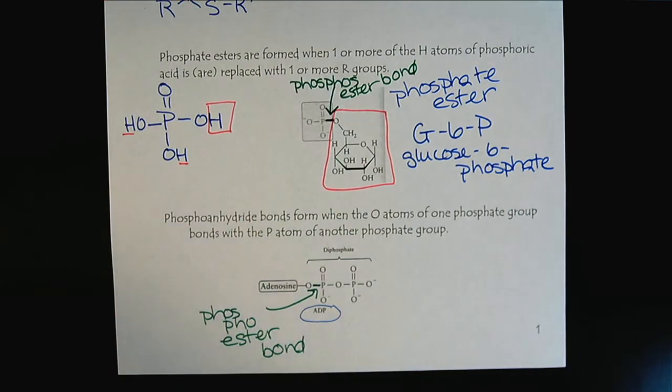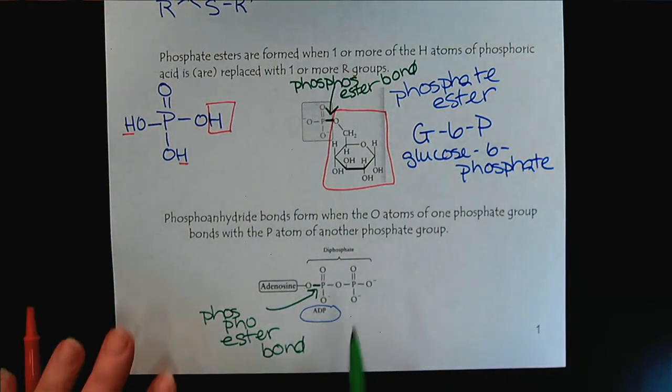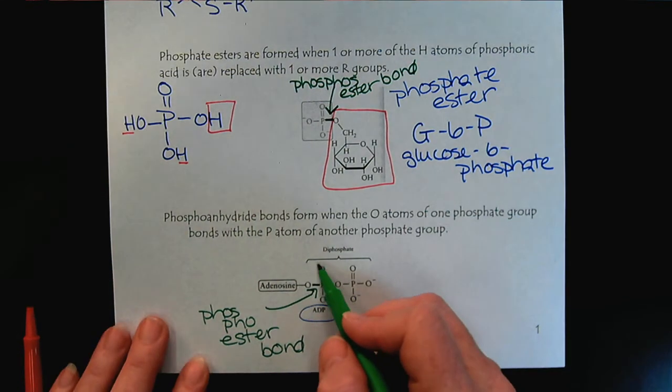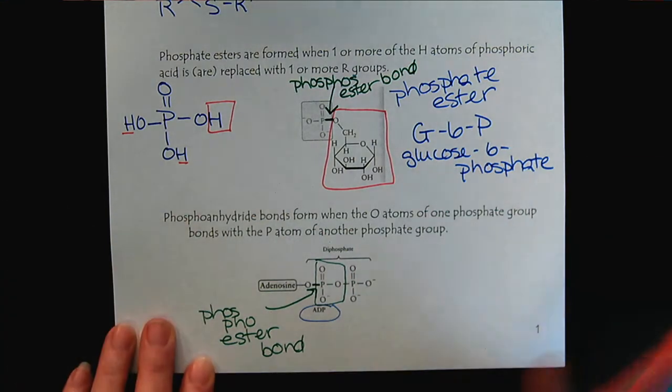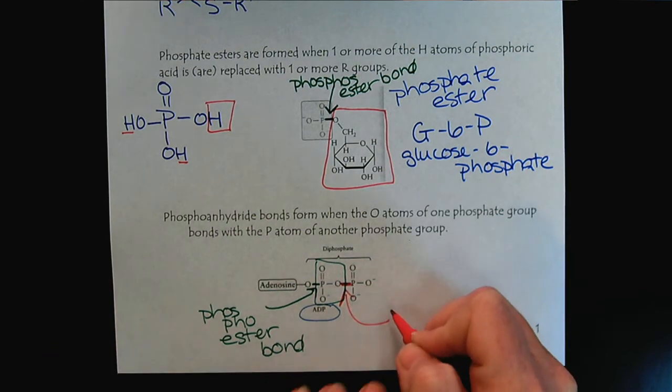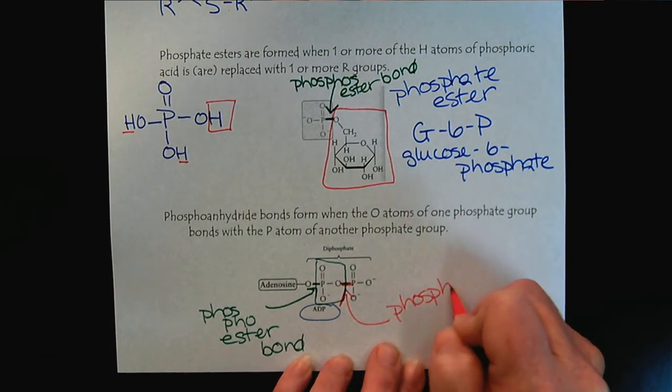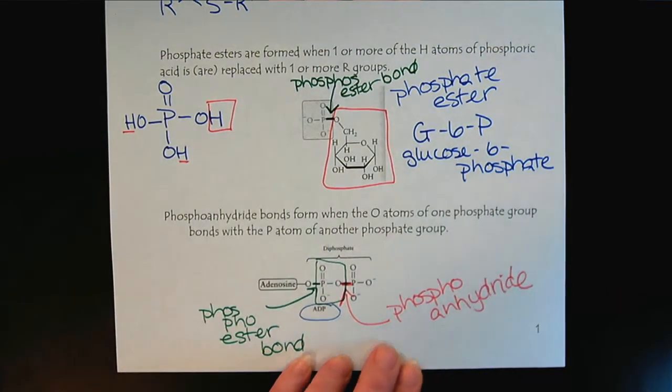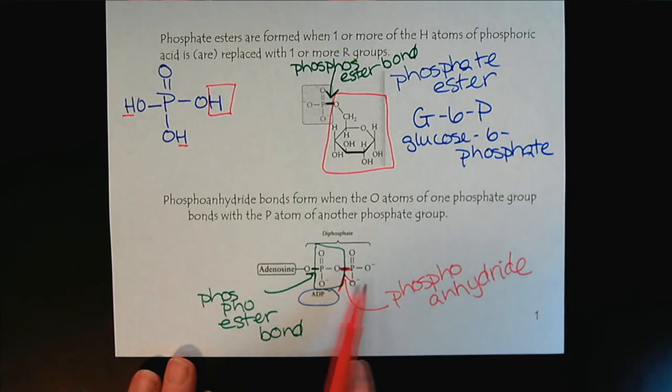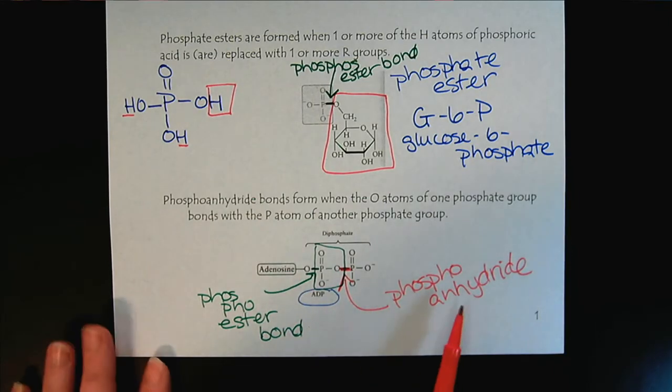And then when the two, and so this phosphate group here, then links to a second phosphate group. And so this bond right here would be the phosphoanhydride bond. So when you're reading about biochemical reactions, we will see all these phosphate groups linked together. And so it's important that when you're reading an explanation, you recognize the difference between the phosphoanhydride bond and the phosphoester bond.